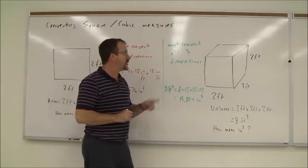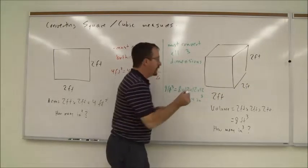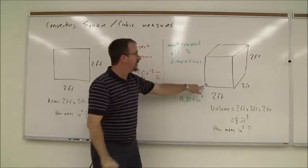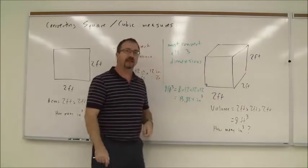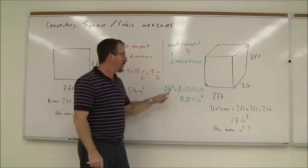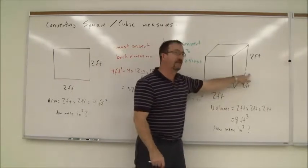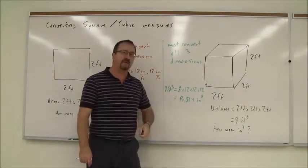Convert that to cubic inches. Remember we have to change those feet to inches, those feet to inches, and those feet to inches to find out how many of these little 1 inch by 1 inch by 1 inch boxes will fit into this 8 cubic feet. So 8 cubic feet times the 12 inches here times the 12 inches here times the 12 inches here is 13,824 cubic inches.